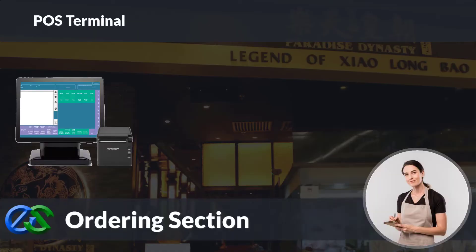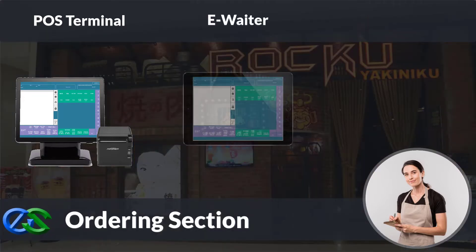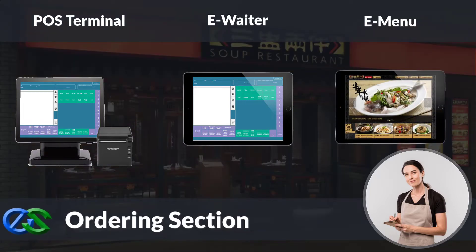You may add an ordering terminal for your floor staff to place orders, with a receipt printer to print out the customer's bill for payment collection. Besides the ordering terminal, the E-Waiter concept allows your floor staff to place orders through a mobile tablet directly. The E-Menu module is a portable tablet POS tool to take orders right at the table, get instant pairing recommendations to help upsell, and transmit orders directly to the kitchen.